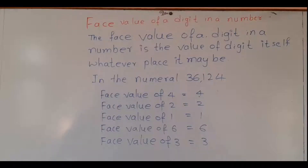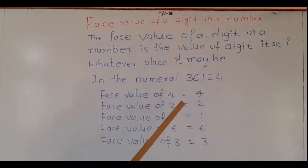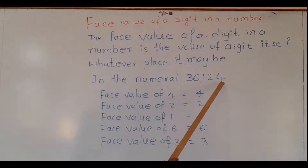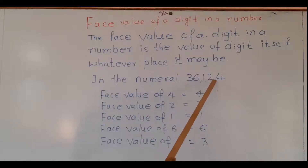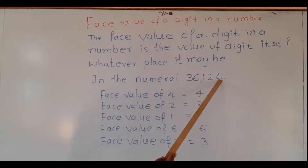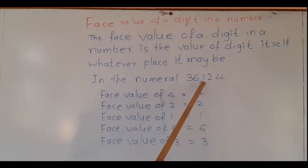The digit in a number — the face value — is the value of the digit itself, whatever place it may be. Irrespective of the place the digit occupies in a number, the value of the digit itself does not change.